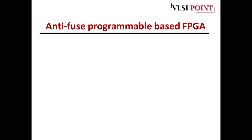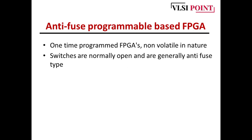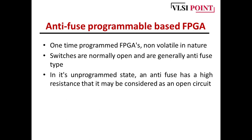The second type is anti-fuse programmable based FPGA. These FPGAs are one-time programmable and non-volatile in nature, so whatever you have programmed is permanently stored in memory and cannot be reprogrammed. The switches are normally open and are anti-fuse type. In the unprogrammed state, the anti-fuse switch has high resistance — effectively an open circuit.